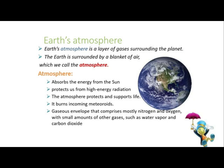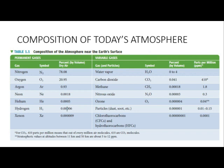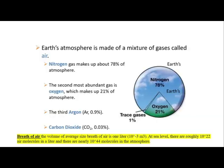It burns incoming meteoroids. To define atmosphere, it's a gaseous envelope that comprises mostly of nitrogen and oxygen, with small amounts of other gases such as water vapor and carbon dioxide. As you can see from the composition, nitrogen comprises 78%, oxygen 21%, and the third one is argon, closely followed by carbon dioxide and water molecules.